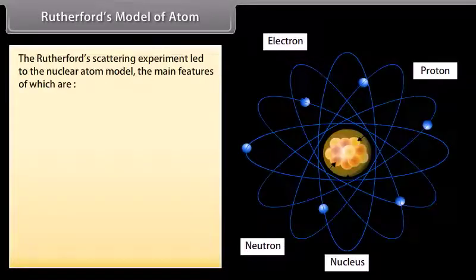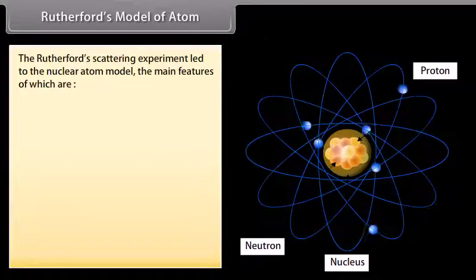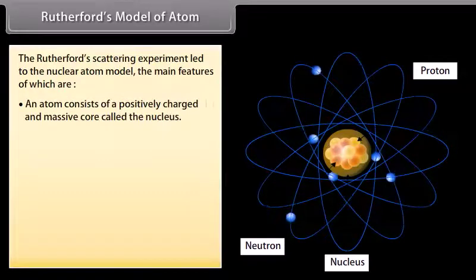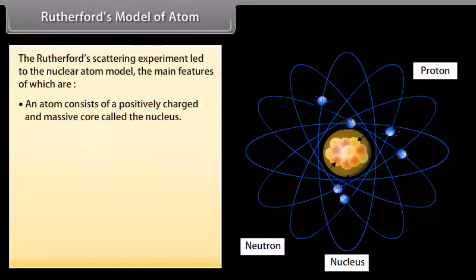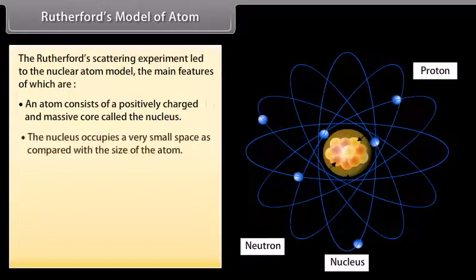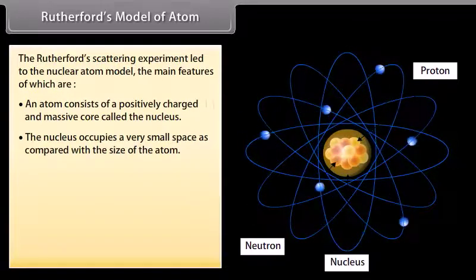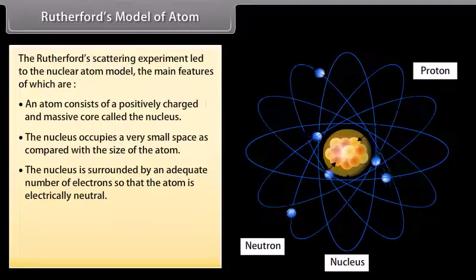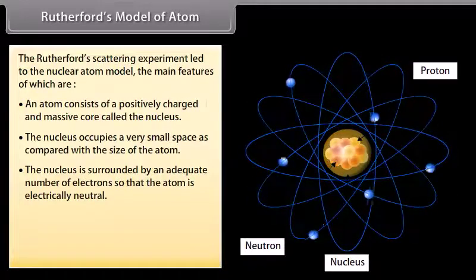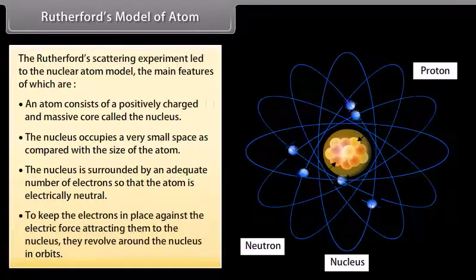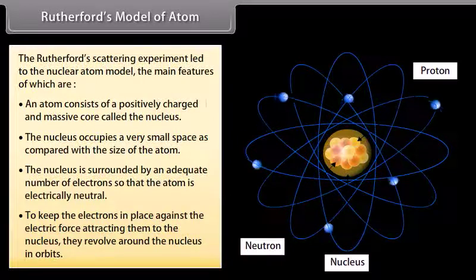Rutherford's scattering experiment led to the nuclear atom model. Its main features are: an atom consists of a positively charged and massive core called the nucleus; the nucleus occupies a very small space compared with the size of the atom; the nucleus is surrounded by an adequate number of electrons so that the atom is electrically neutral; and to keep the electrons in place against the electric force attracting them to the nucleus, they revolve around the nucleus in orbits.